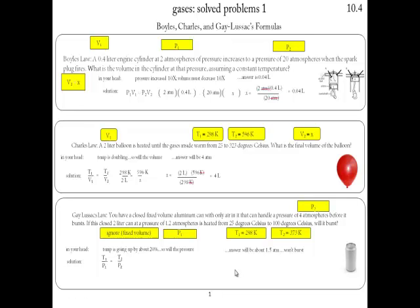T1 over P1 equals T2 over P2. Our estimate shows that the temperature really isn't going up much, 20% maybe. So it's only going to go from 1.2 to 1.5 atmospheres or so. I can already give you the answer - but solve it mathematically and cross-multiply and you get one and a half atmospheres, well below its bursting point. Don't forget to answer the question.